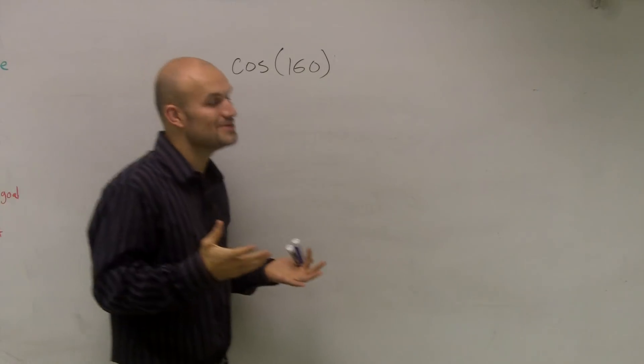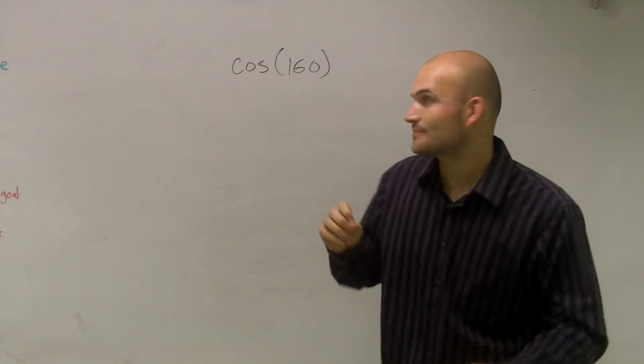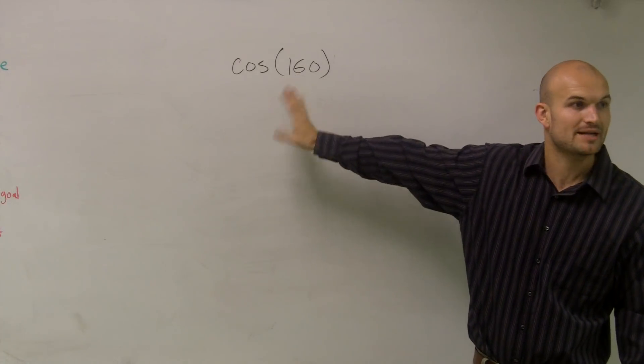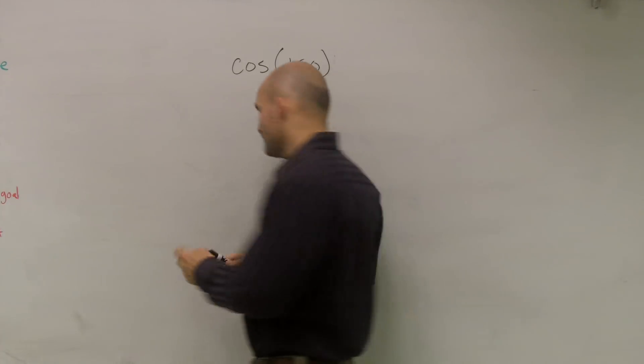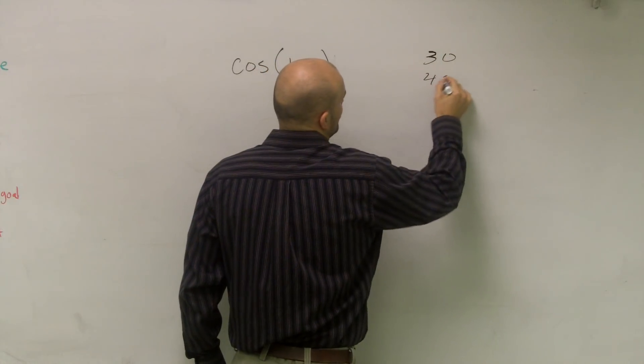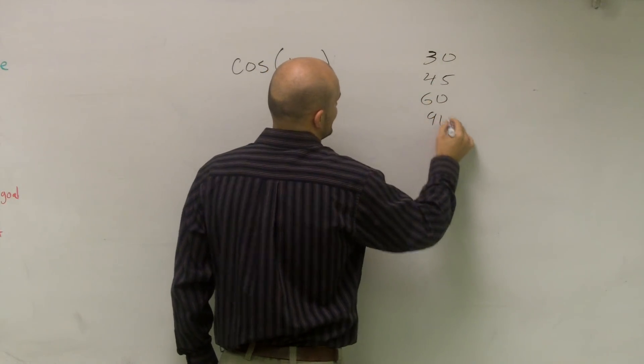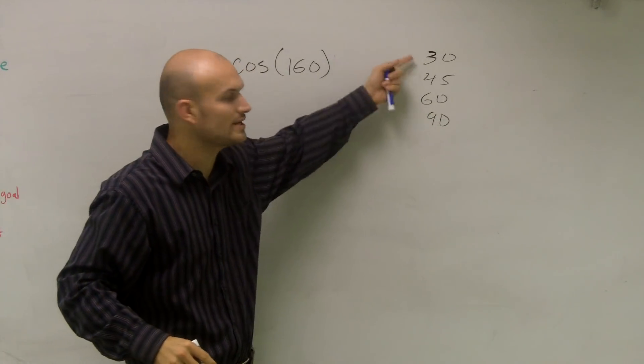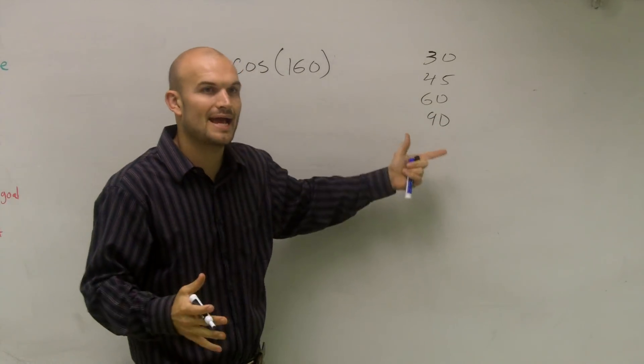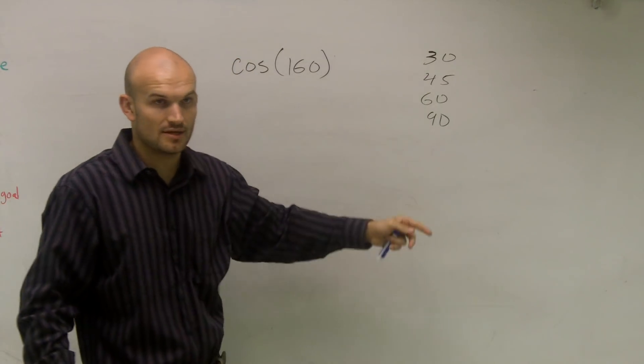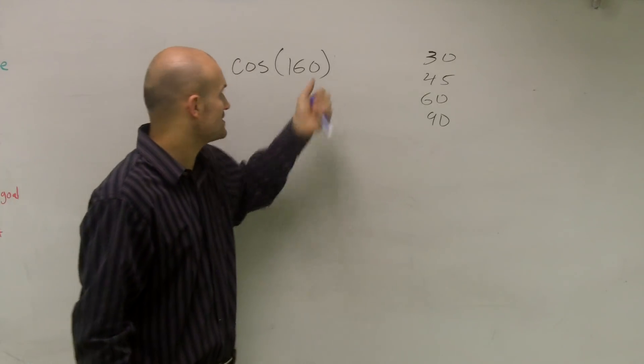So what we do know is that we can figure it out. Like I said, without plugging it in your calculator, that'll give you an approximate answer. We want to find the exact. So what we want to do is we know we can find the exact answers of 30, 45, 60, and 90. Really just 30 and 45. So we can determine what are two angles that are multiples of these angles that add up or subtract to give me 160.